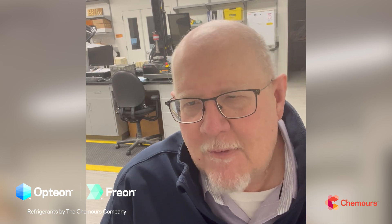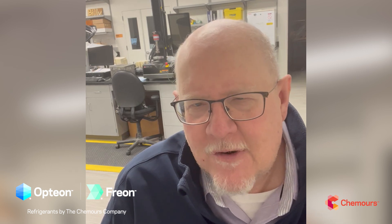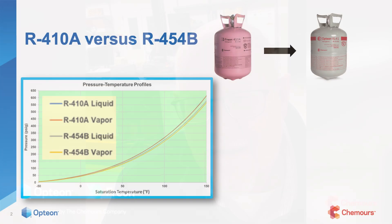I want to throw the pressure-temperature curves up here — that's the heart of what we do in the HVACR industry, pressure-temperature manipulation. You can see how close they are: both the liquid and vapor pressures for 410A and 454B are pretty much right on top of each other over the whole applicable range.